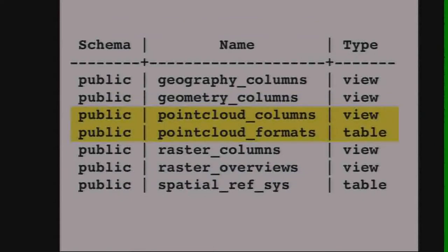We've got a lot of tables and views in our database after enabling those extensions — most of them are from PostGIS. But there are two from Point Cloud: Point Cloud Formats, which holds the schema information, and — like Geometry Columns — the Point Cloud Columns view, which looks into the system tables and tells you which tables have Point Cloud columns in them.